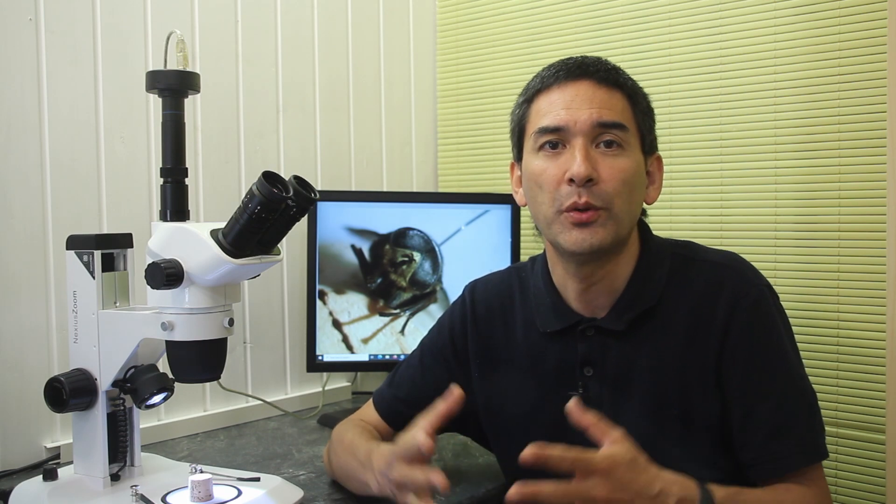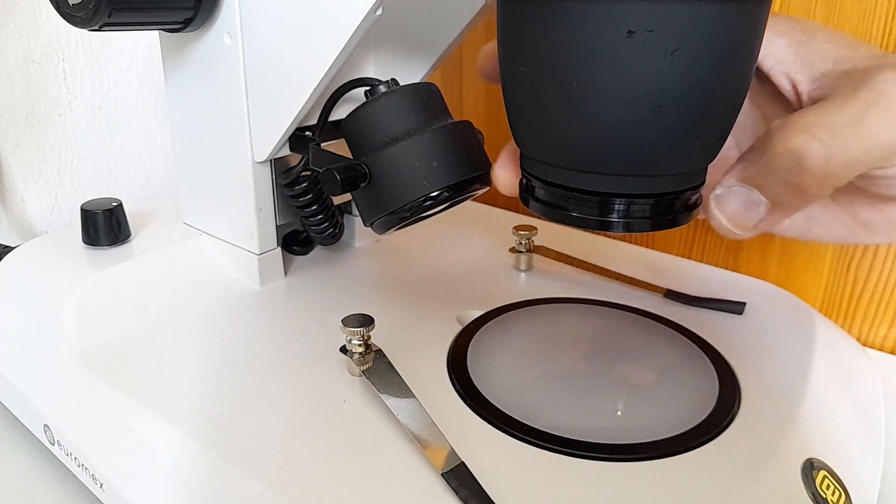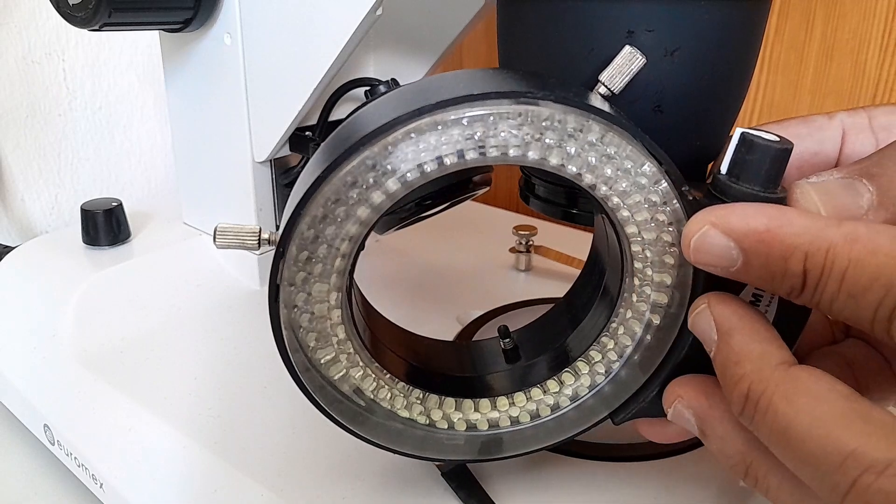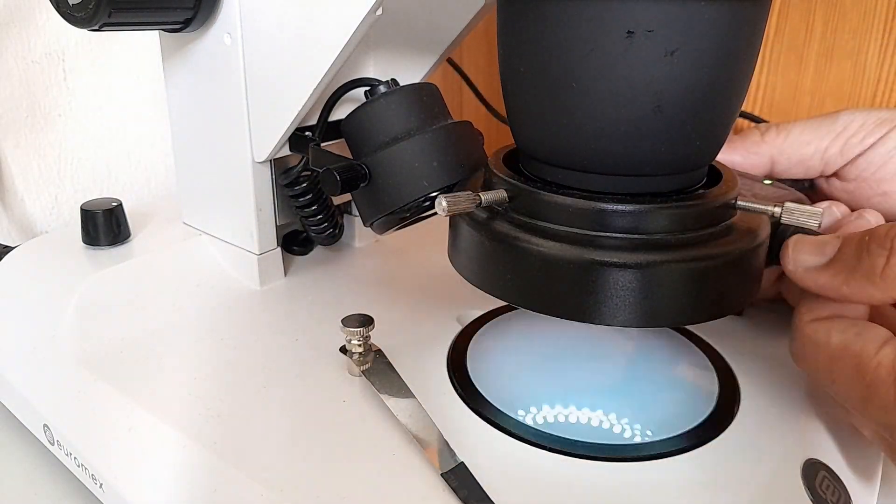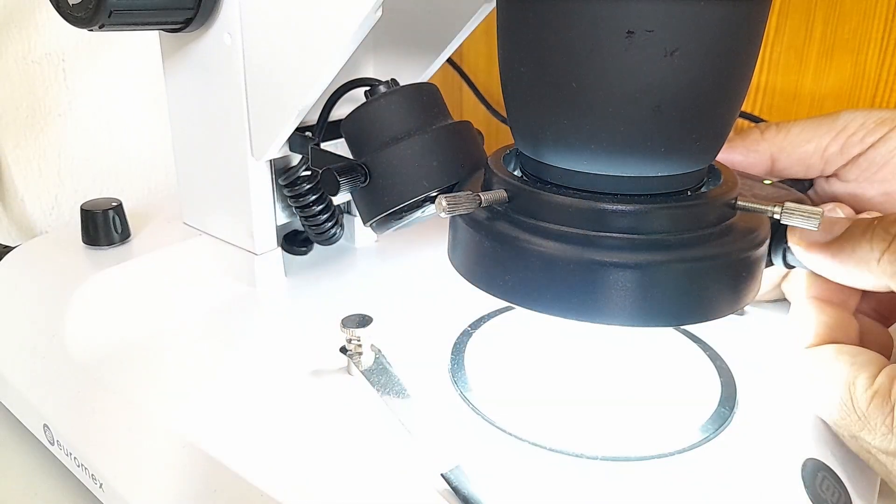There might also be cases where you need more light, and in this case I recommend that you connect an additional ring light. There is an adapter for this ring light which you can connect to the objective just like you connect the Barlow lenses. Now let's have a look at a few objects under the microscope.